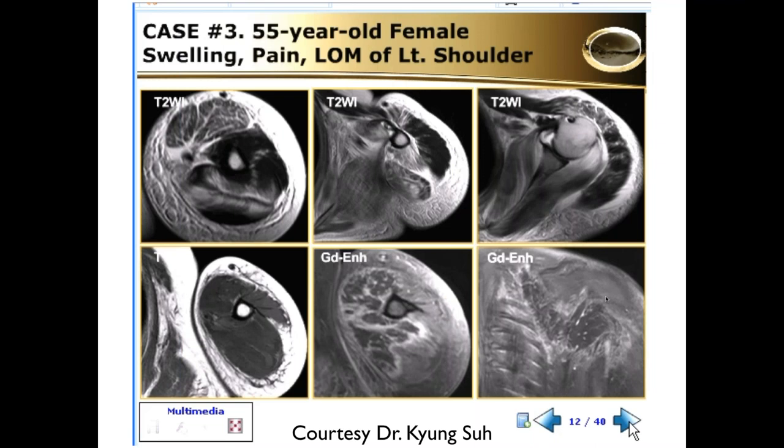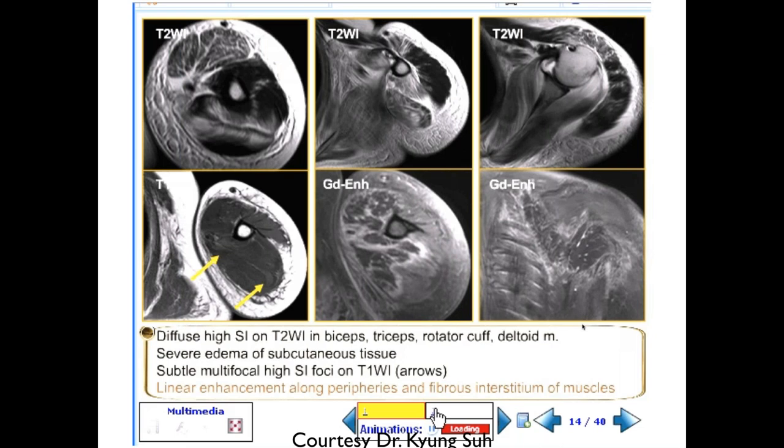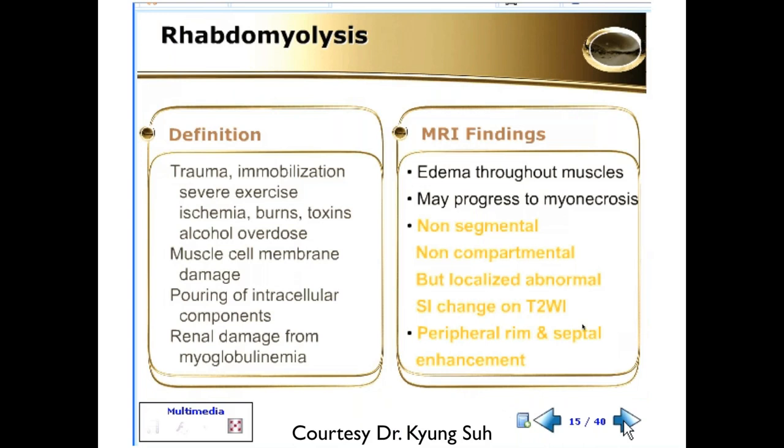A 55-year-old female who fell — there's a lot of edema and necrosis in the left upper extremity muscle. This is rhabdomyolysis or focal myonecrosis, and it can easily progress to myonecrosis especially with compartment syndrome. You can end up with renal damage from all the myoglobinemia that results.